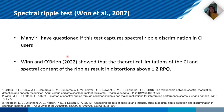However, many have questioned if this test actually captures spectral discrimination in CI users due to the limitations of the CI. For instance, Winn and O'Brien showed, in a theoretical experiment, the limitations of the CI and the spectral content, and that this results in distortions above two RPOs.